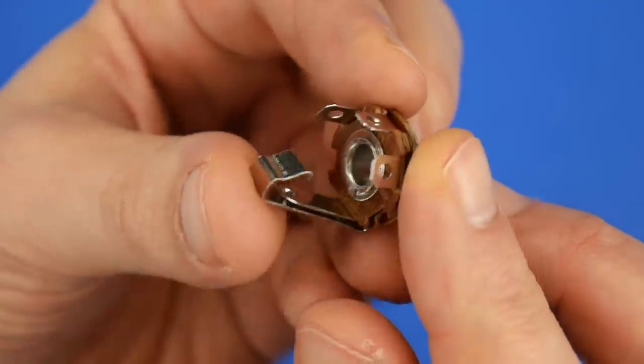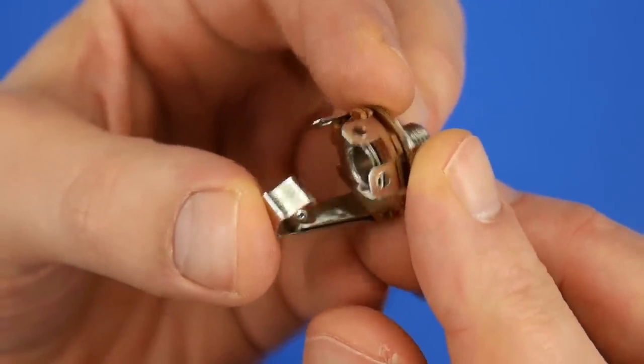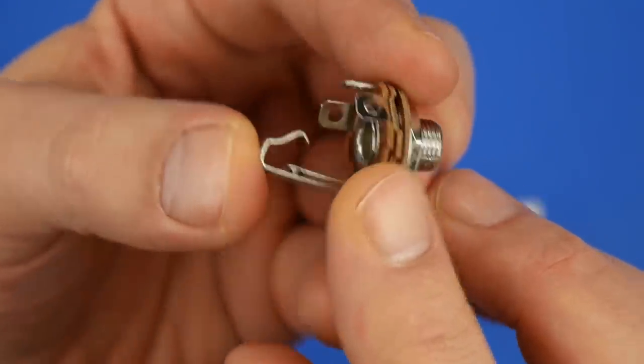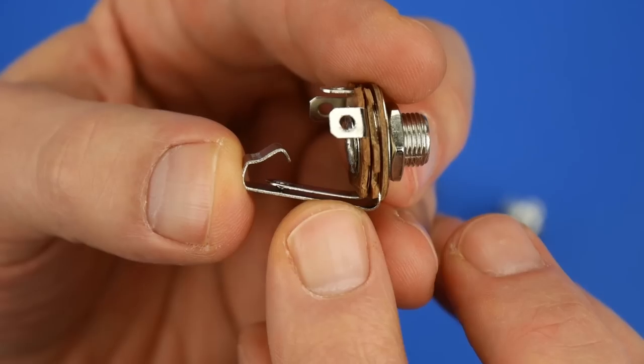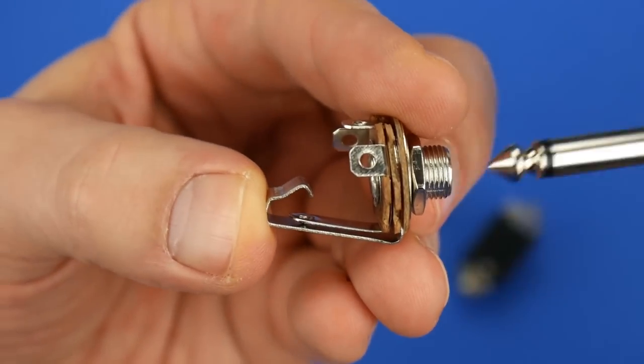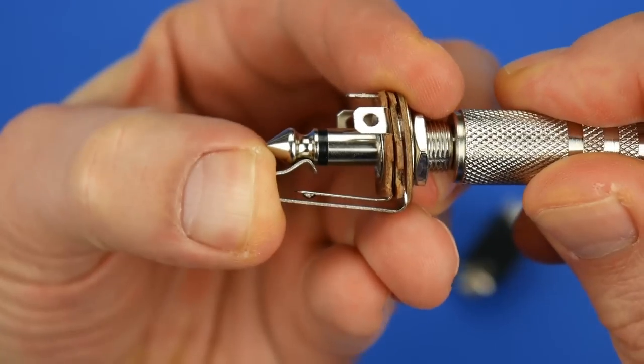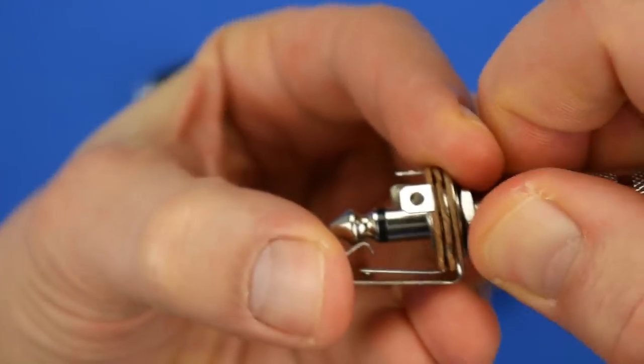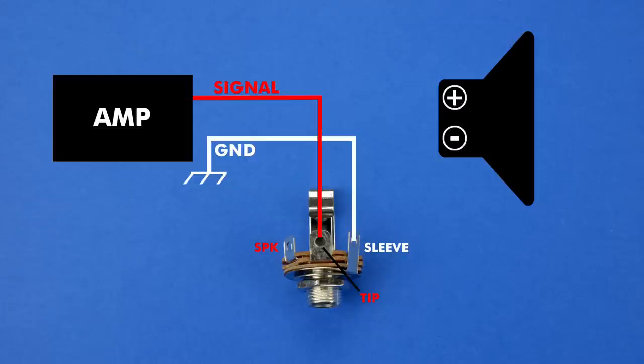I prefer to use a jack with a switch contact. This jack has an additional connection point for the speaker. And it's connected to the tip contact. But it's disconnected whenever a plug is inserted. So the speaker is automatically muted. Connect the signal and ground wires. And use two additional cables to connect the speaker.